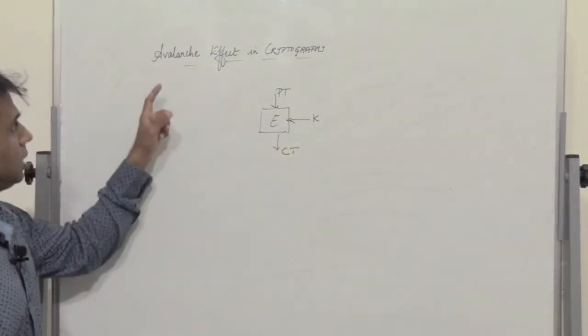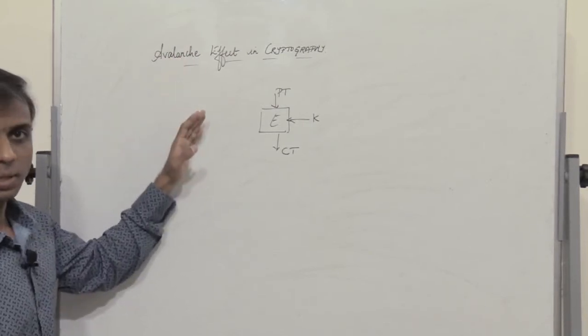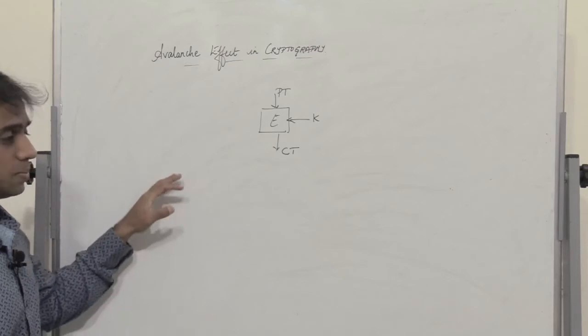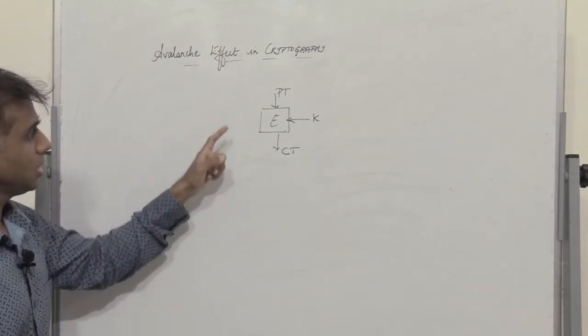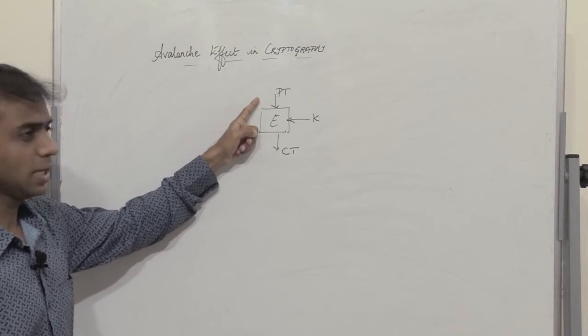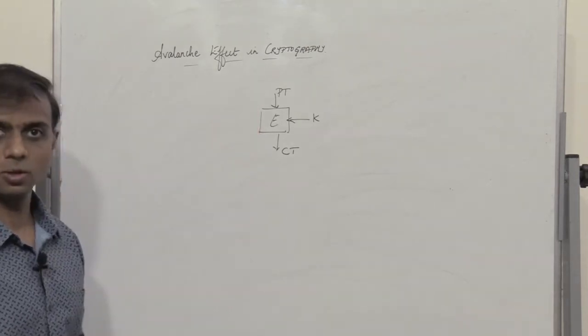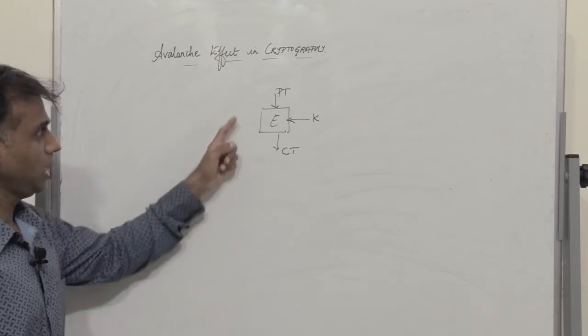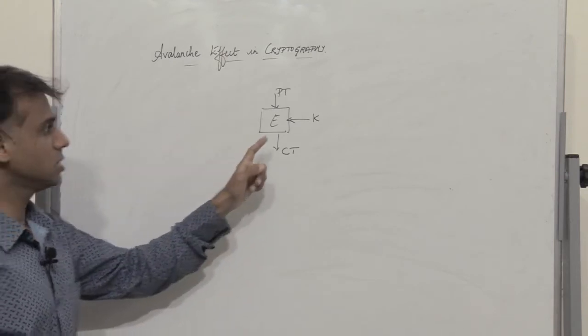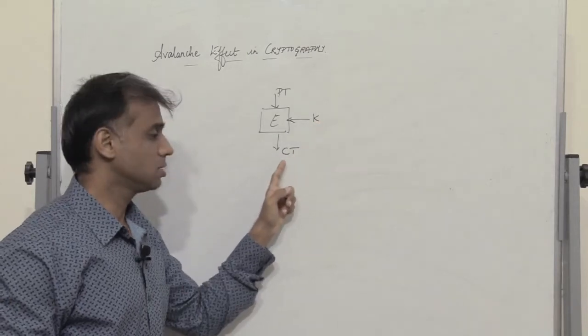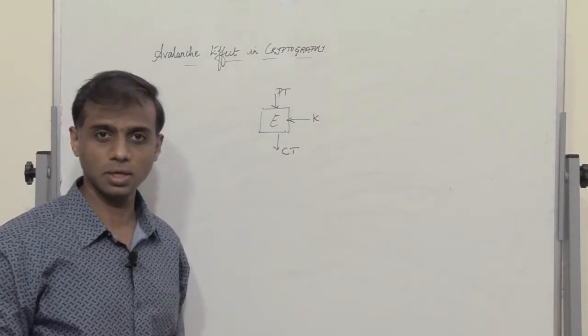Right now, the avalanche effect is a very desirable effect of the encryption algorithm. Now what does this mean? The effect basically means that if I make a small change in the plain text, there is a significant large change in the ciphertext, or the plain text remaining the same, if there is a slight change in the key, then there is a significant change in the ciphertext.